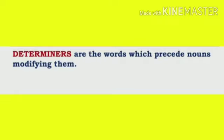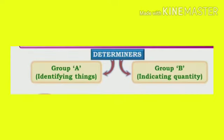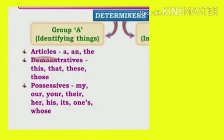It makes clear which things we are referring to, or how much of a substance we are referring to. In this sense, determiners broadly fall into two groups: Group A, identifying things, and Group B, indicating quantity. Today we are going to learn Group A determiners.